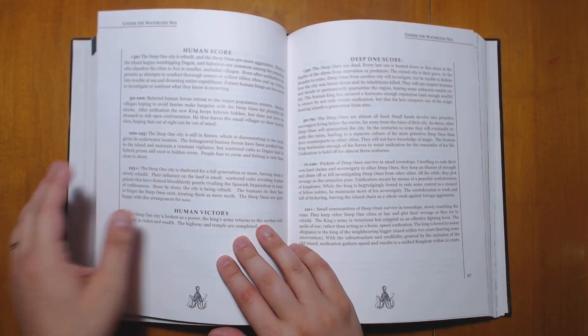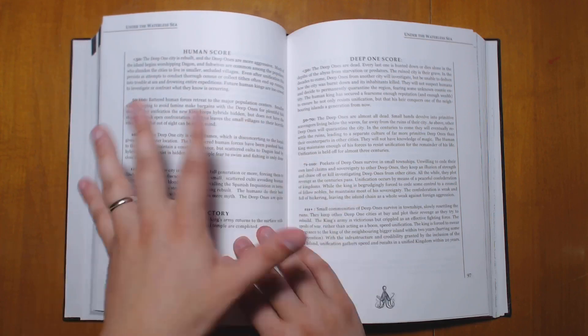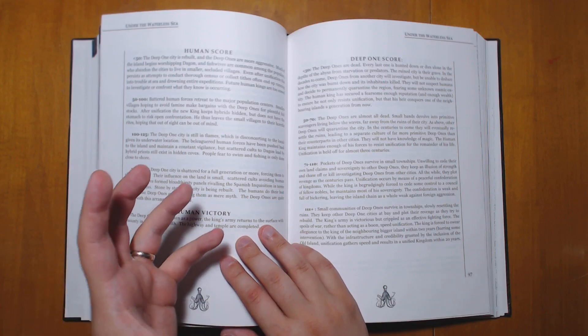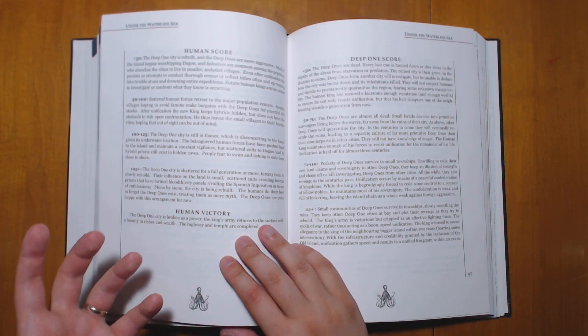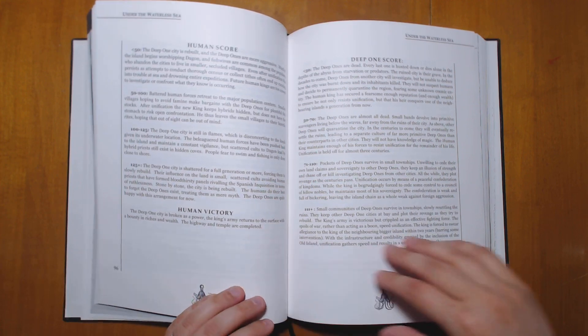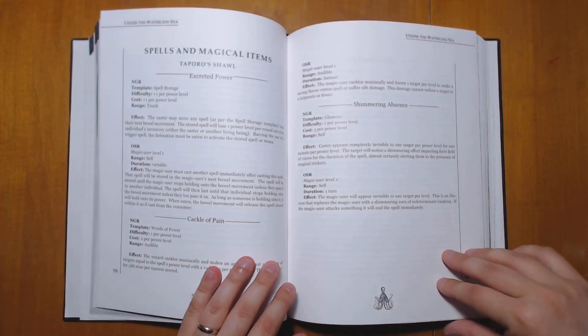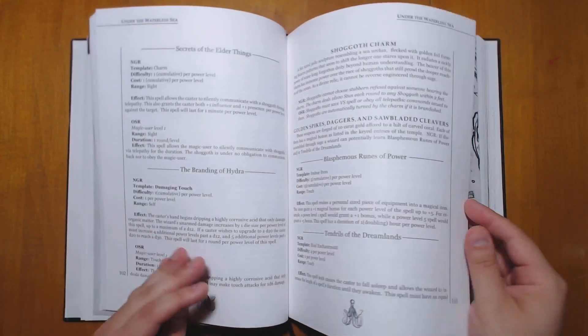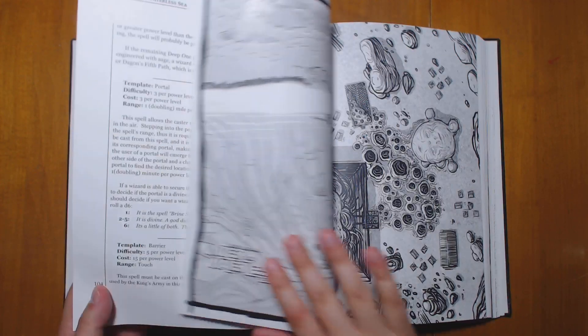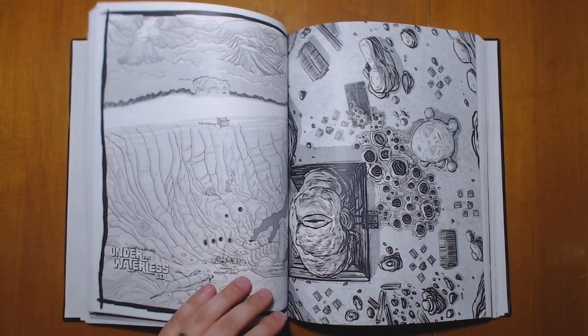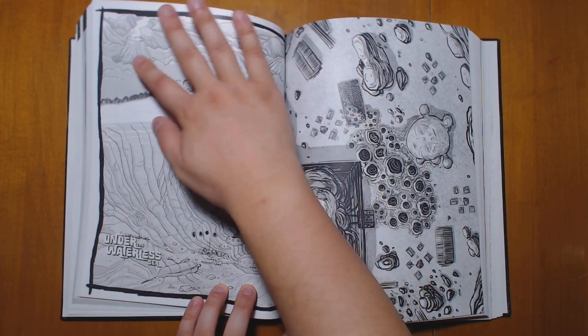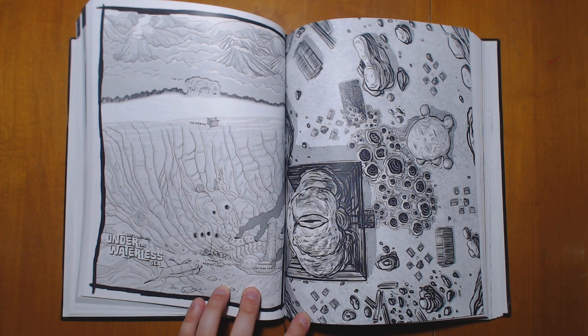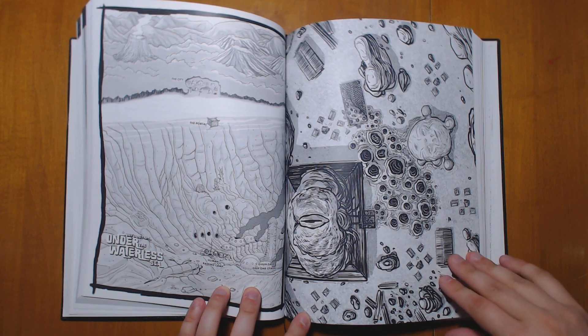Instead, it has lots of notes on what could happen depending on what the players do. What are the long-term consequences of their action? For example, you could have a deep one victory. So as you do this adventure, there's a score for humans and a score for deep ones, depending on how well they're doing and how you aid or hinder one side or another. And that can help determine the exact outcome of the adventure by the end. Spells and magical items are at the end, along with stats for the monsters, I believe. Yeah, here's the general layout. You have your island with the city, then you have a portal that you can walk through, and then you can march down with your army under the ocean and try and burn down a city beneath the waves.